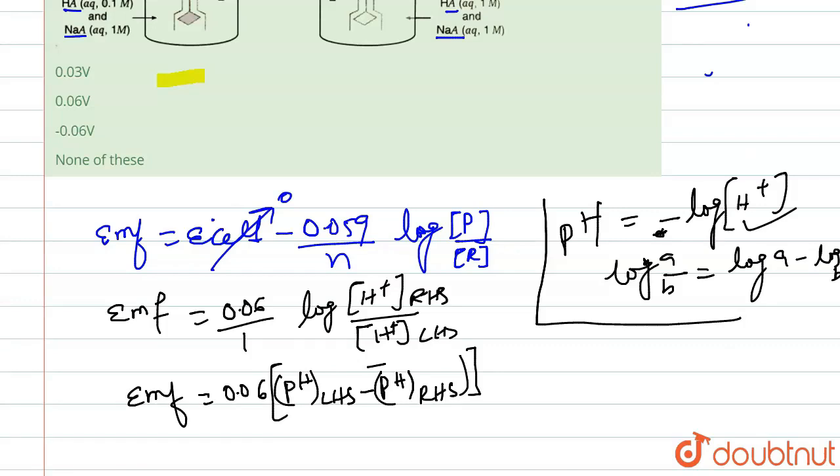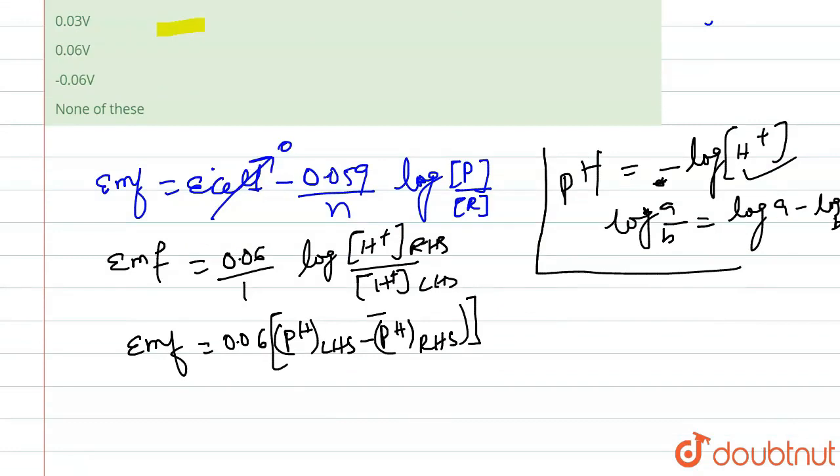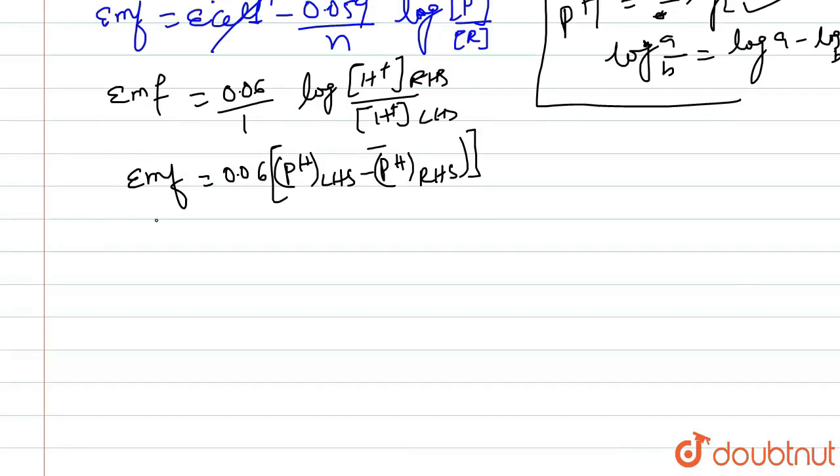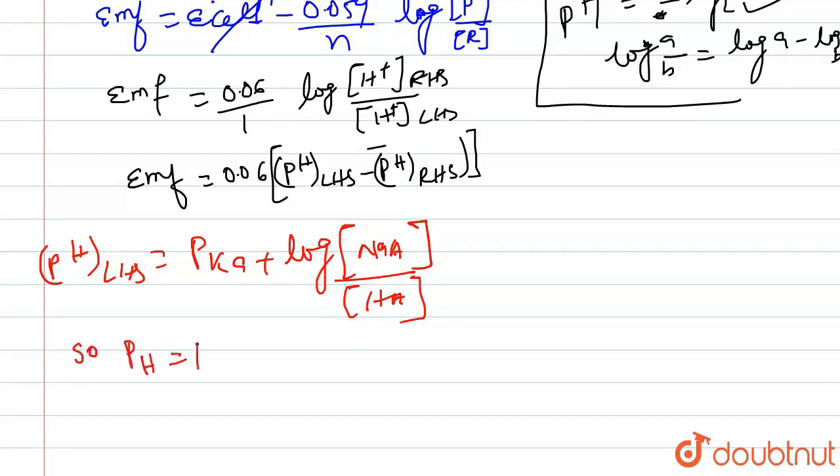For pH LHS, let us write the value. pH of LHS equals to pKa via formula plus log of Na concentration upon HA. pH equals pKa plus log of 1, as concentration of Na is 1, concentration for HA is 0.1.